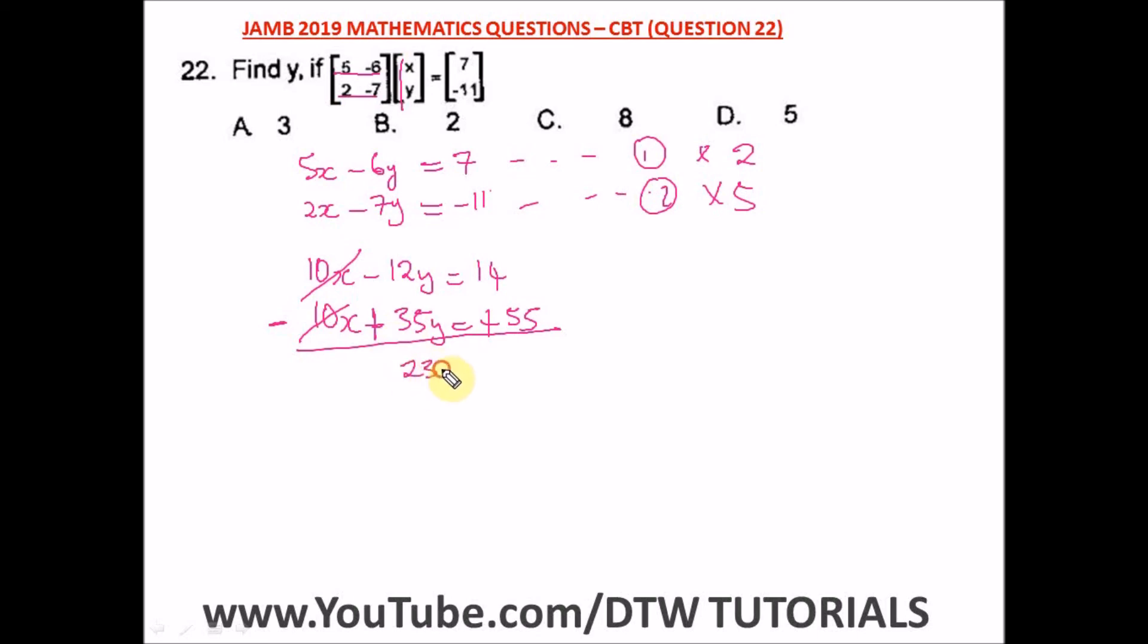So to get our y, we divide both sides by 23. 69 divided by 23 will give us 3. So this is our answer, y is equal to 3, and our right option here is option A.